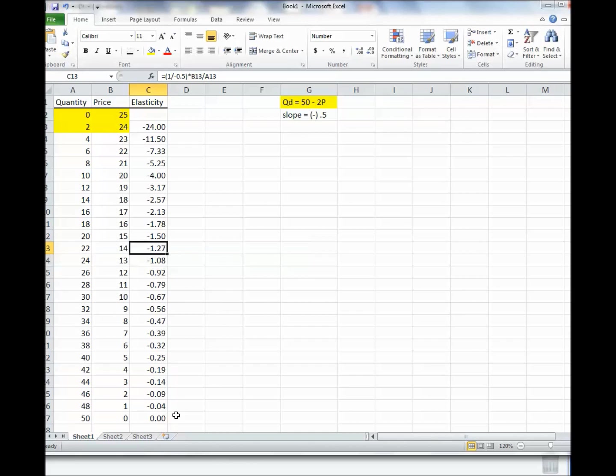When you get dead square in the middle, which is probably right in here somewhere, dead square in the middle, it will be unitary elastic. And then below there, it will be inelastic. Okay, so that's how you would do it in Excel.